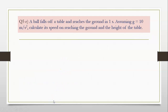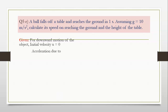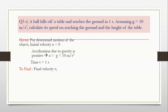Now we move to the next sum — 5e. A ball falls off a table and reaches the ground in 1 second. Assuming g is equal to 10 meter per second square, calculate its speed on reaching the ground and the height of the table. Given for downward motion: initial velocity u is equal to 0, acceleration a is equal to g is equal to 10 meter per second square, time t is equal to 1 second. We have to find final velocity v and height s. Since two quantities have to be found, we will require two formulae.